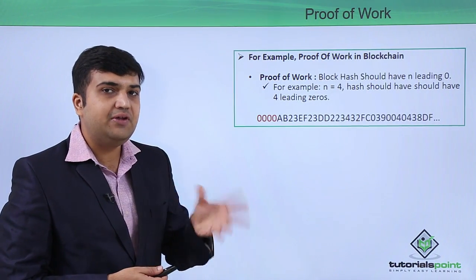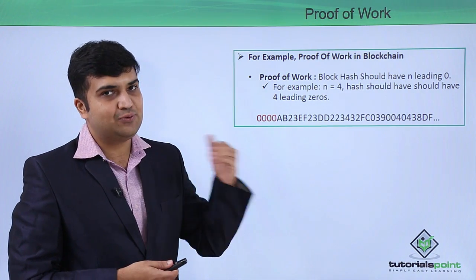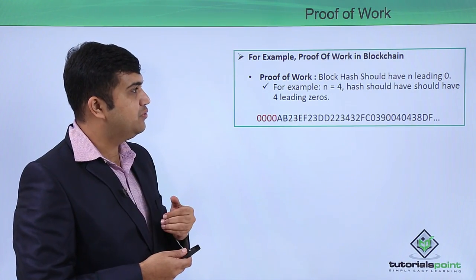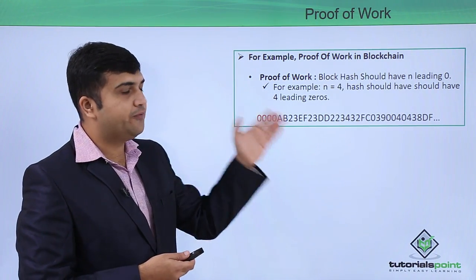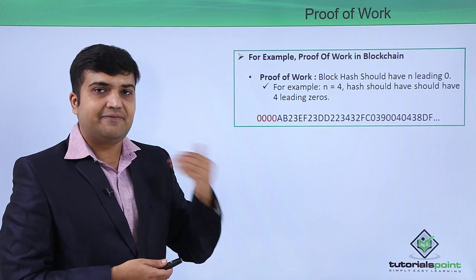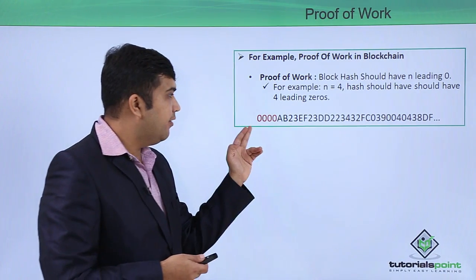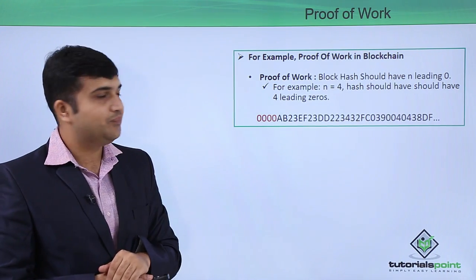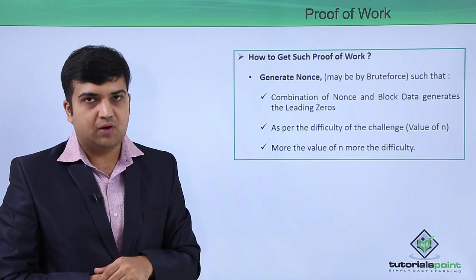One of the common examples of proof of work in blockchain is the n leading zeros. For example, you have to generate a hash value such that n equals four. In that case, you will have to generate the hash value such that there are four leading zeros in the hash value as shown over here. So how will we generate such proof of work in case of blockchain?